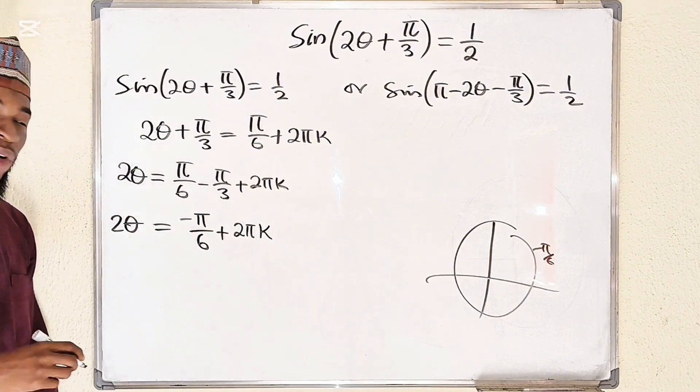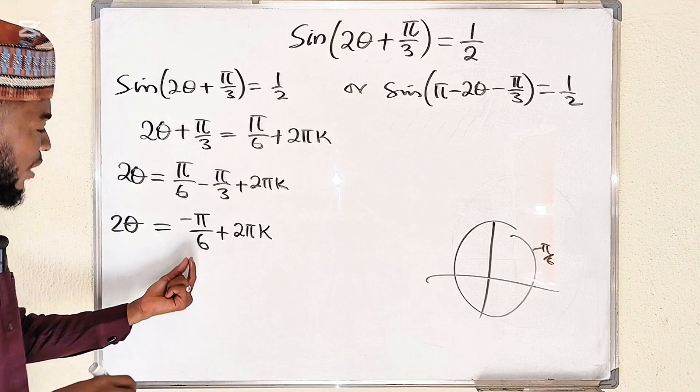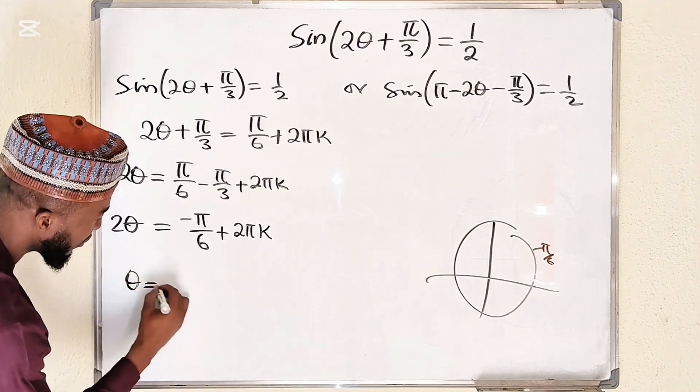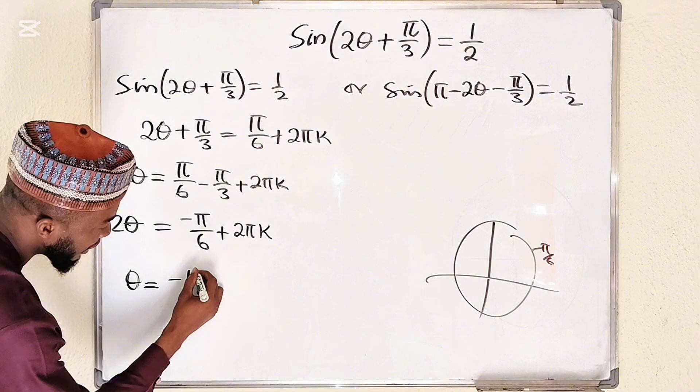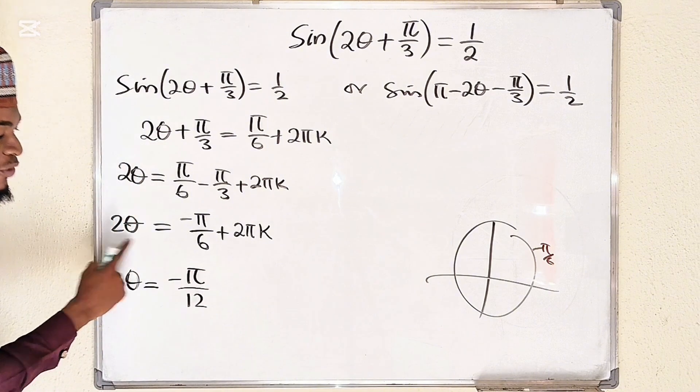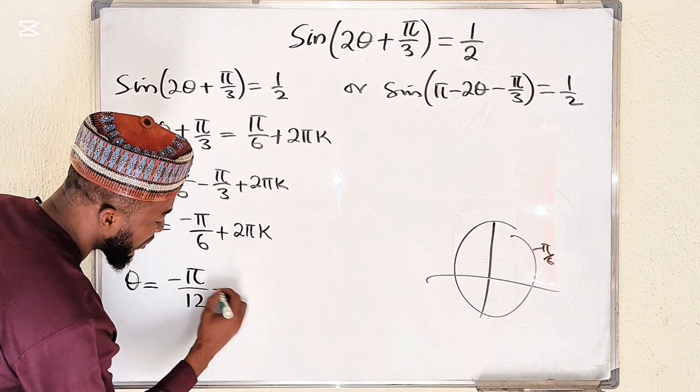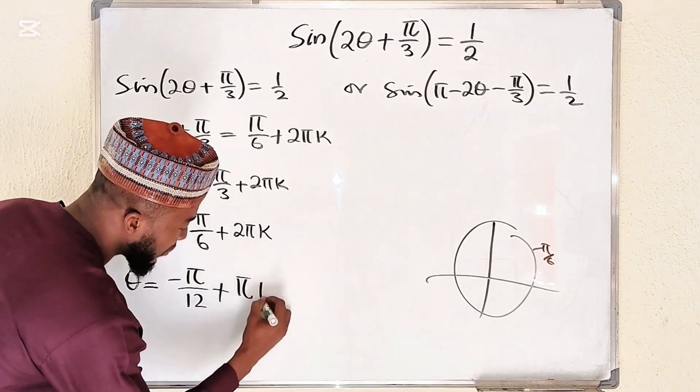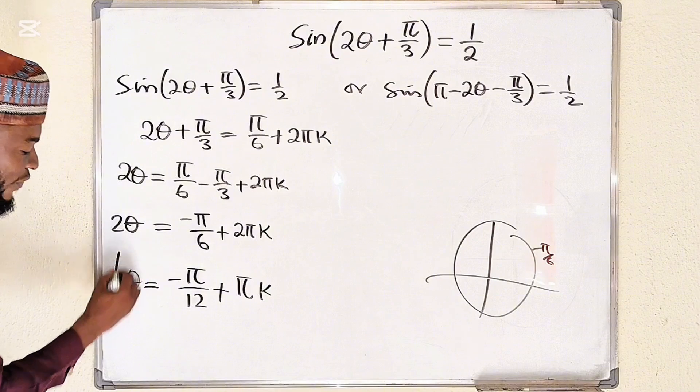Then finally you divide both sides by 2. Theta will be equal to negative pi divided by 12, if you divide by 2, 6 times 2 is 12, plus you divide this by 2 as well it becomes pi k. So this is our first solution.